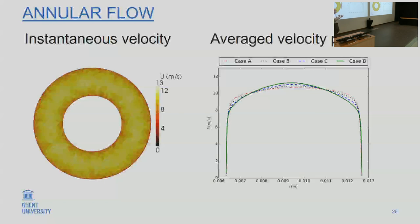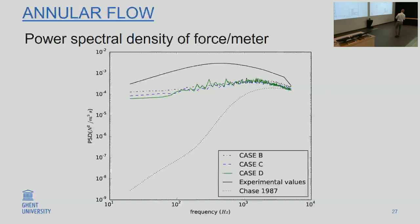Here is a cross-section of the annular geometry with velocity magnitude figures — very inhomogeneous, with typical chaotic turbulent structure. When you average them out, you see that as you refine the grid, the velocity profile converges towards a converged solution. We also look at the forces on the central tube — the power spectral density of the force per meter of tube length. Different grid resolutions give quite similar results, which don't fully agree with experimental values. However, the simulations already provide much better data than what is currently used in simple correlations in industry.